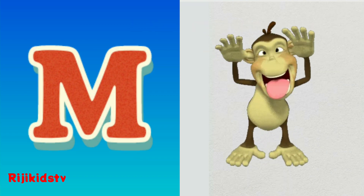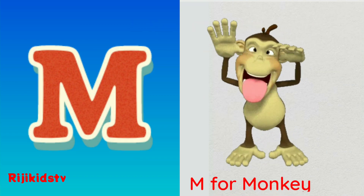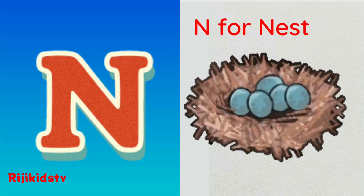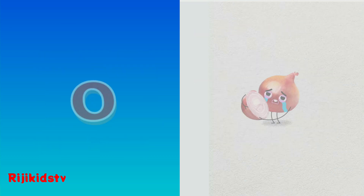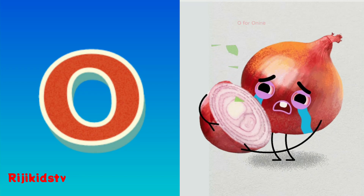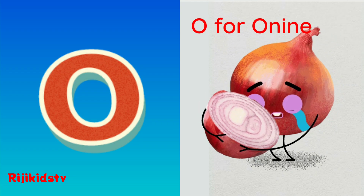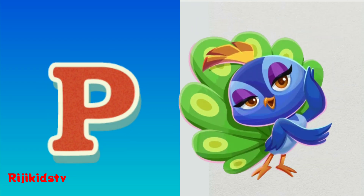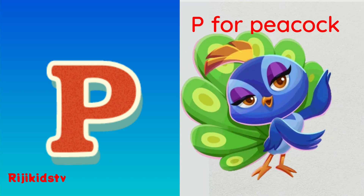M. M for Monkey. N. N for Nest. O. O for Onion. P. P for Peacock.